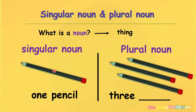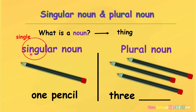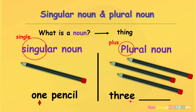Let's see another example. What is a noun? A noun is also a thing, such as a pencil. What is the singular noun? The singular noun means single. It means that there is one of something. For example, one pencil. What about the plural noun? The plural noun means plus. It means that there is more than one. Three pencils. One pencil, three pencils.